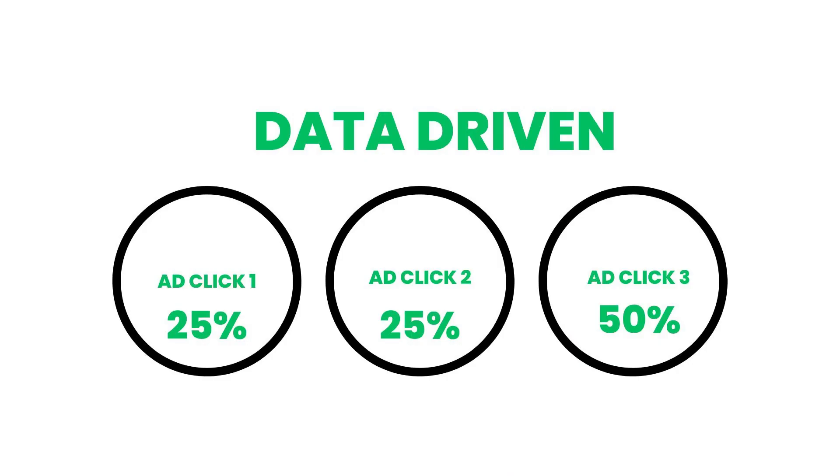Going back to the previous example with last click attribution — if there were three ad clicks that led to the conversion, Google might determine that the first click should receive 25% of the credit, the second click 25%, and the third click 50%. You can see how that's different from last click, where the third and final click received 100% of the credit.